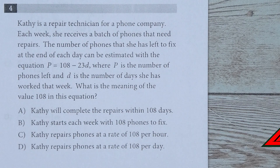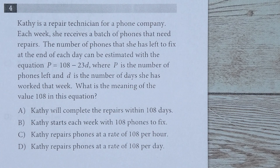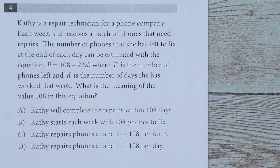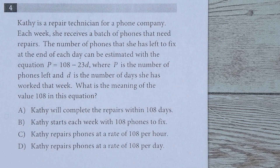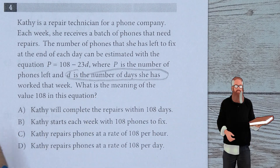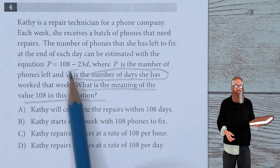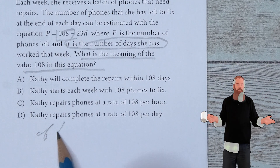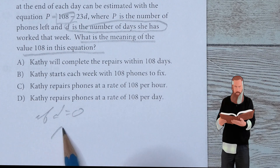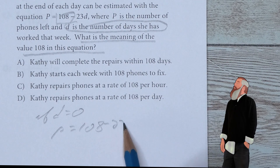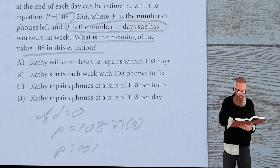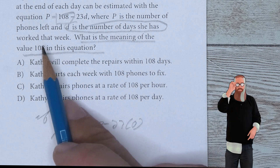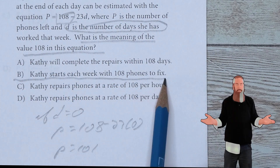Kathy is a repair technician for a phone company. Each week she receives a batch of phones that need repairs. The number of phones left at the end of each day is estimated with p equals 108 minus 23d, where p is the number of phones left and d is the number of days worked. What is the meaning of 108? If d equals zero, then p equals 108, meaning Kathy starts each week with 108 phones to fix.